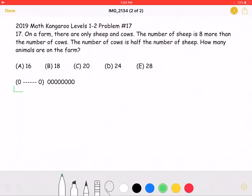Let's let these circles, we don't know how many, represent the number of cows on the farm.